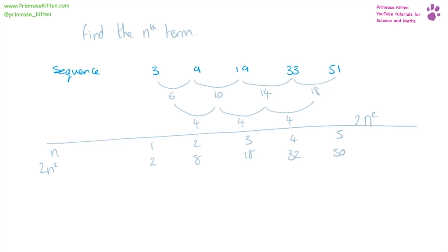Now we need to look at the difference. What do we need to do to get from our 2n squared to our original sequence?